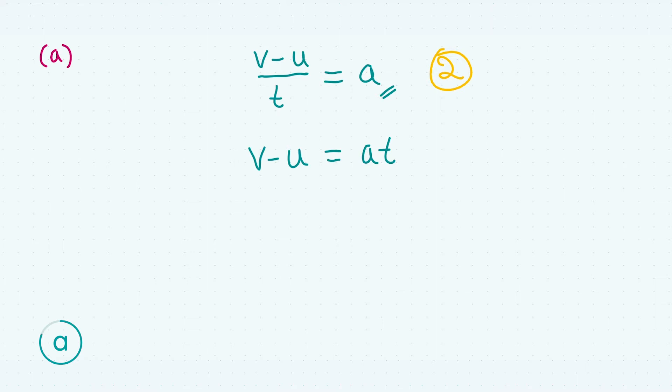Basically what you do here, you can just manipulate the formula. Multiplying across both sides by t, adding u or the initial velocity to both sides, and we obtain the same expression as required. Showing all necessary steps you get your final two marks.